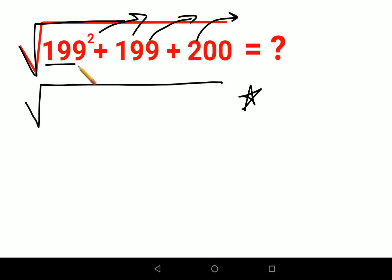So what we'll do is write 199 squared as 199 into 199, plus this 199, and 200 will be written as it is.